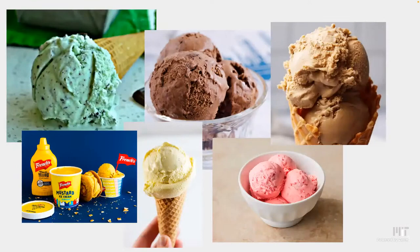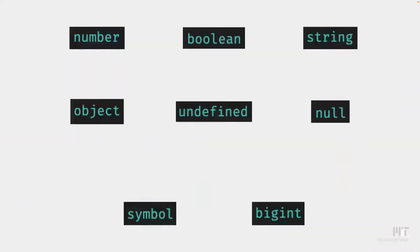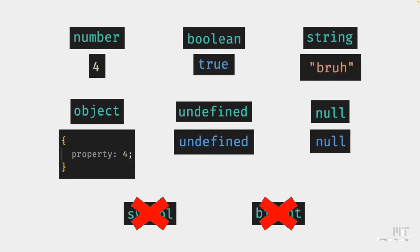Can anyone tell me what all these ice creams have in common? They're all types of ice cream — mint chocolate, chocolate coffee, strawberry, vanilla, mustard — all classic types of ice cream. We can say the same about JavaScript. All of these are what we call primitive types of JavaScript, meaning they're the most basic and fundamental types of the language: number, boolean, string, objects, undefined, null, symbol, and BigInt.